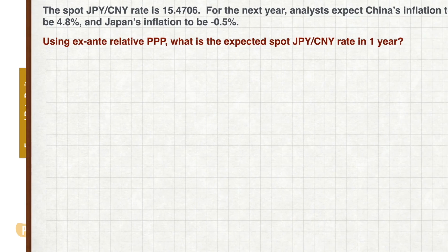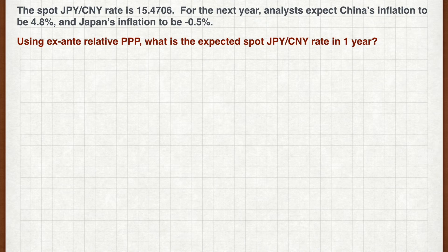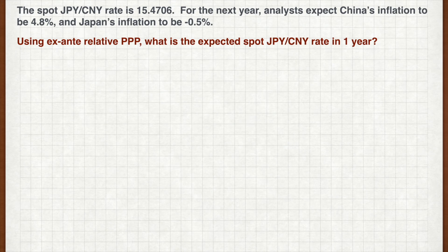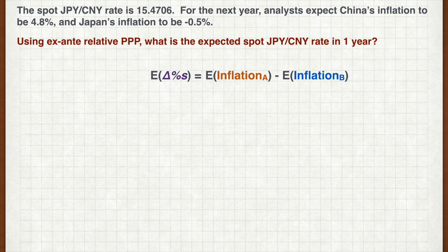Let's pause for another exercise. The spot JPY per CNY rate is 15.4706. For the next year, analysts expect China's inflation to be 4.8% and Japan's inflation to be minus 0.5%. Using ex-ante relative PPP, what is the expected spot JPY per CNY rate in one year? According to the ex-ante version, the expected percentage change in spot exchange rate is the expected inflation in the foreign currency minus the expected inflation in the domestic currency. Plugging in the figures, we get minus 5.3%.